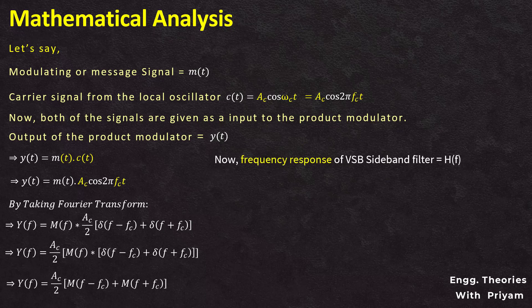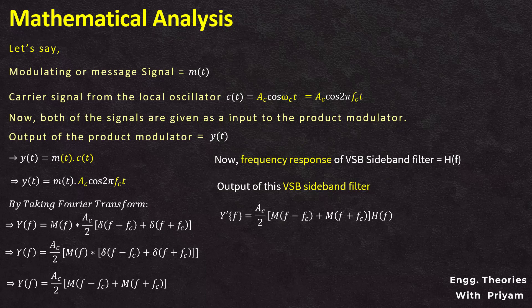The frequency response of the VSB sideband filter is H(F). The output of this filter Y'(F) is the multiplication of Y(F) with H(F). So Y'(F) = (Ac/2)[M(F−fc) + M(F+fc)]·H(F). Depending on the frequency response of this VSB sideband filter, we will generate the VSB modulated signal.